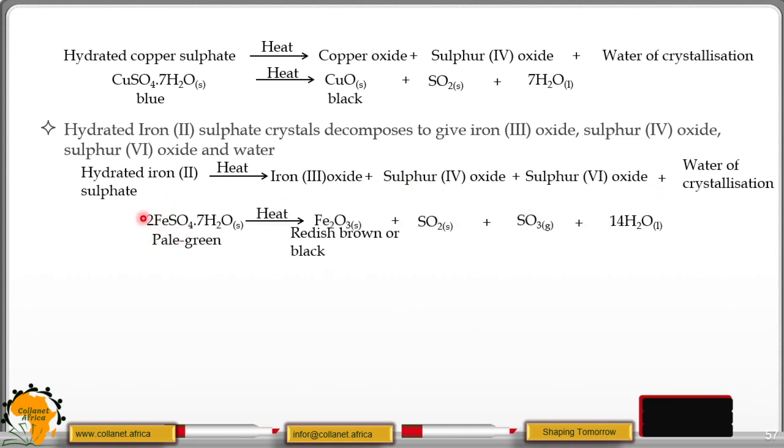This is the equation. The iron is pale green in color. It is a heptahydrate with seven molecules of water. You're going to get the reddish-brown or black residue, which is iron(III) oxide, sulfur(IV) oxide, and sulfur(VI) oxide. These two gases are acidic in nature, and therefore, when you introduce blue moist litmus paper, it's going to change into red. It is important to note that all ammonium salts decompose on heating.